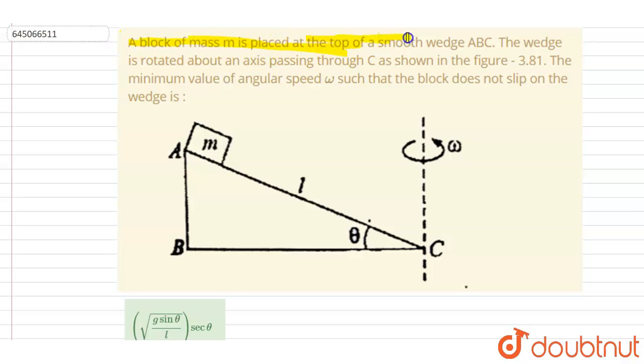m is placed at the top of a smooth wedge ABC. The wedge is rotated about an axis passing through C as shown in the figure. The minimum value of angular speed omega such that the block does not slip on the wedge is...